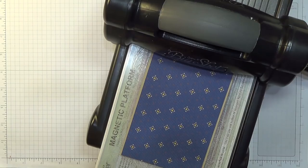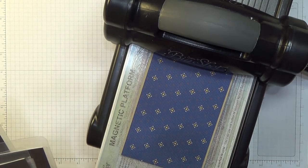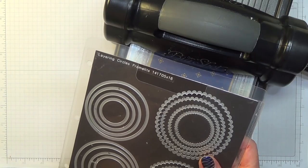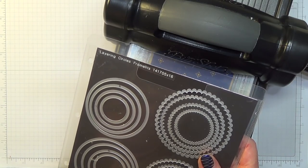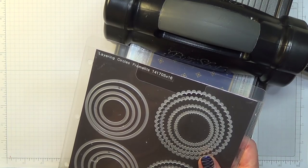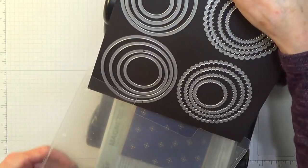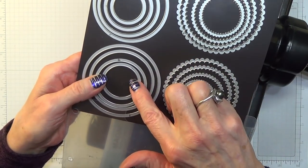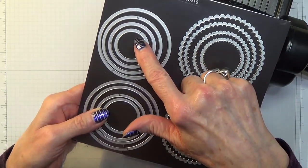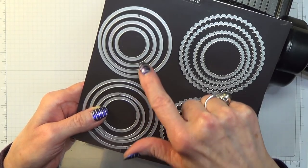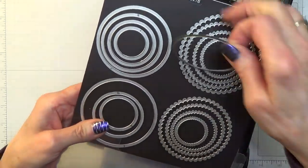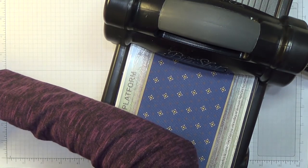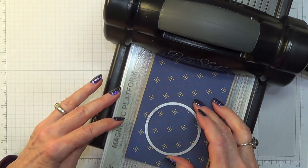For this one, I am using my layering circles framelits, and I am using number six, I think. Yeah, number six. So if you're new to my videos, whenever I'm talking numbers for dies, I always start counting from the smallest die. So that's number one, two, three, four, five, six.